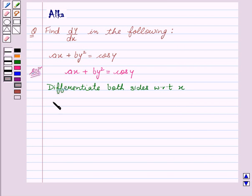So this can be written as a into d/dx of x plus b into d/dx of y squared equal to d/dx of cos y.